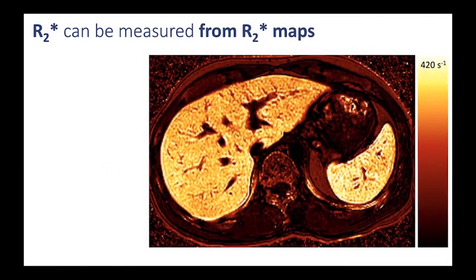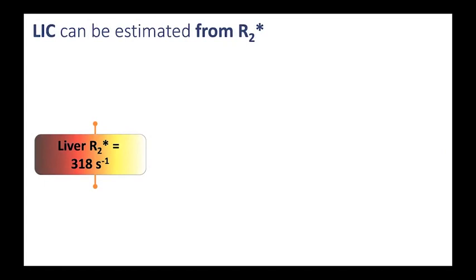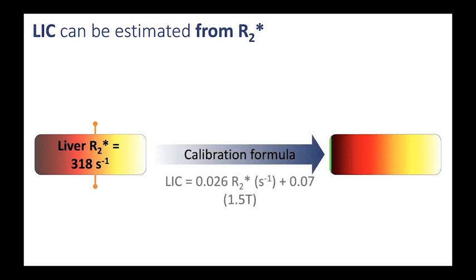How do we measure R2* from R2* maps? Basically, we need to draw regions of interest. Typically about four ROIs suffice — I like to place two on the right lobe and two on the left lobe — and I record the R2* in each and take the average. In this case, the average is 318 inverse seconds. Since this was a 1.5 Tesla magnet, I plug 318 into the calibration formula and derive that the LIC is approximately 8 milligrams per gram.